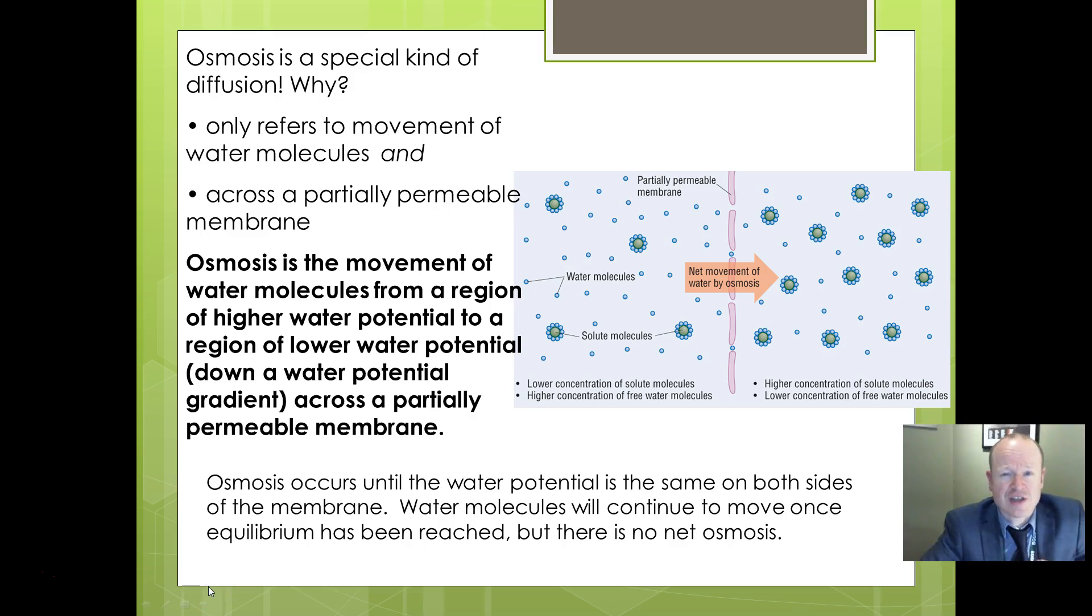So osmosis is just a fancy kind of diffusion. Remember that diffusion is movement of molecules from higher concentration to lower concentration down a concentration gradient, and we've learned about that already. Osmosis is just diffusion referring specifically to water molecules - in other words, movement of water molecules from where there are more water molecules to less water molecules.